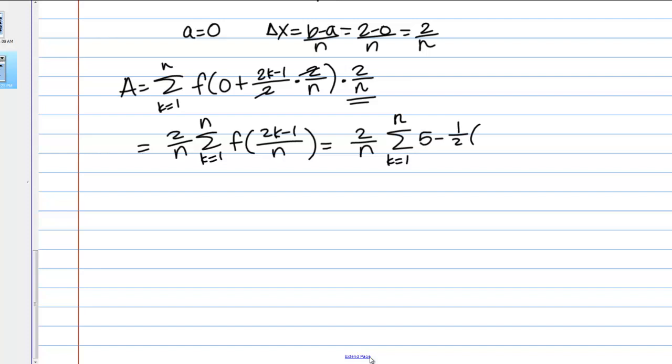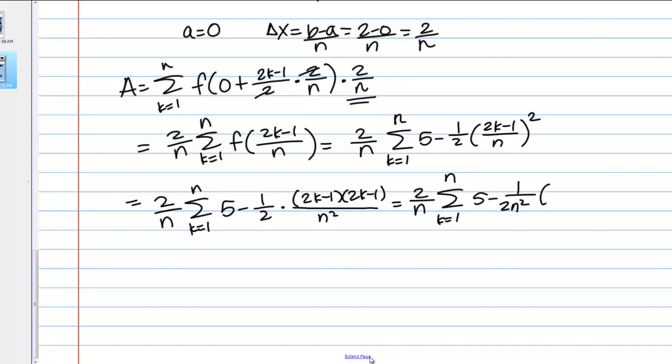So, 5 minus 1/2 times x squared, so 2k minus 1 over N, quantity squared. And now, comes a lot of algebra, right? We need to break that down so that we'll be able to use our summation formulas. So, 5 minus 1/2 times 2k minus 1 times 2k minus 1 over N squared. Okay, so, that's 5 minus 1 over 2N squared, and I can FOIL that out like I did before. So, it was 4k squared minus 4k plus 1.